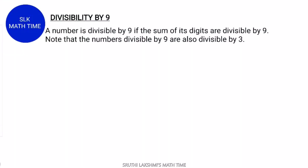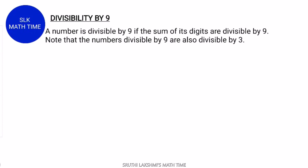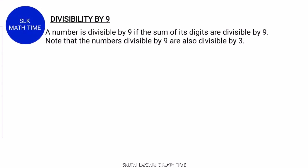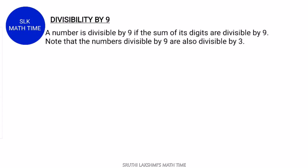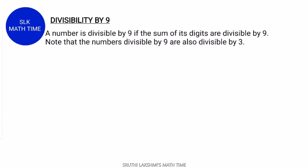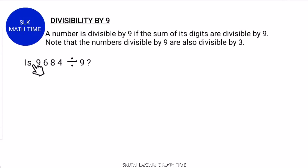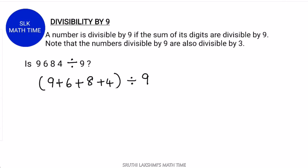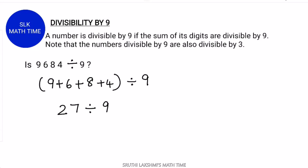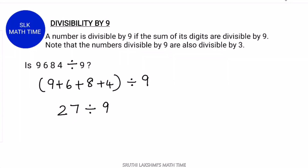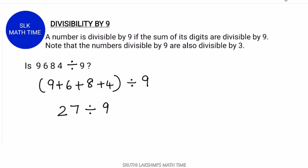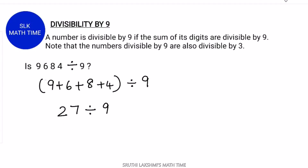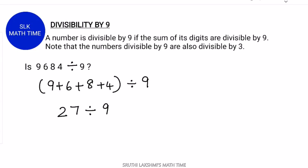Now let's see the divisibility rule for 9. A number is divisible by 9 if the sum of its digits is divisible by 9, and also divisible by 3. Let's see an example. Is 9684 divisible by 9? First, let's add all the digits: 9 plus 6 plus 8 plus 4. When we add this all together, we get 27, and 27 is divisible by 9 and also divisible by 3. So 9684 is divisible by 9.